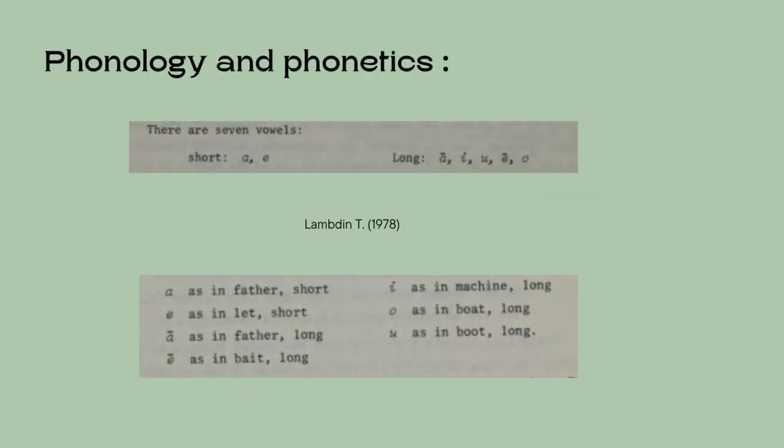Ge'ez distinguishes short and long vowels, which is a property of earlier Semitic according to standard reconstruction. However, not all scholars accept it as a significant feature of the phonology. There are seven vowels. Transliterated according to Lambdin, there are short vowels — a and e — and long vowels: ā, e, u, ē, and o. The book provides approximations to the pronunciation of the vowels as seen on the slide.